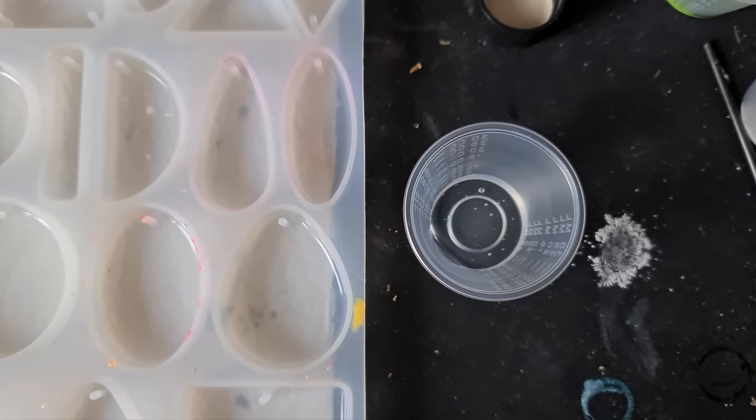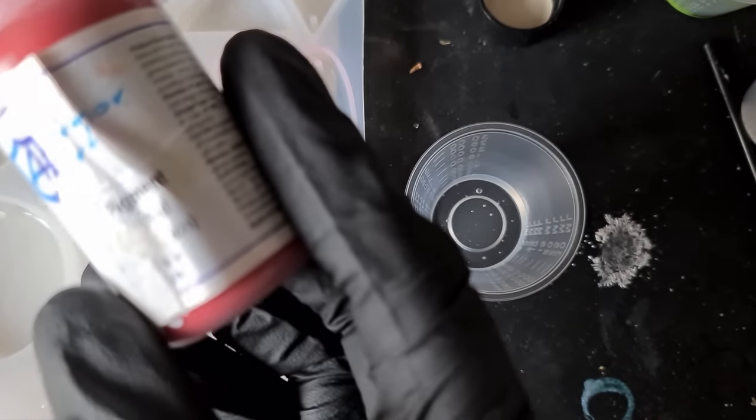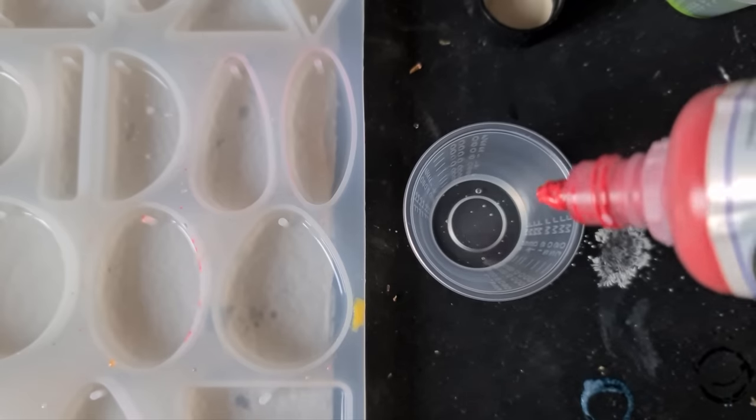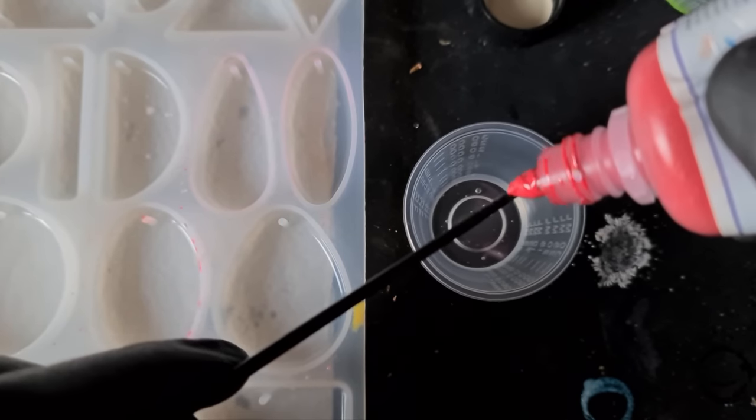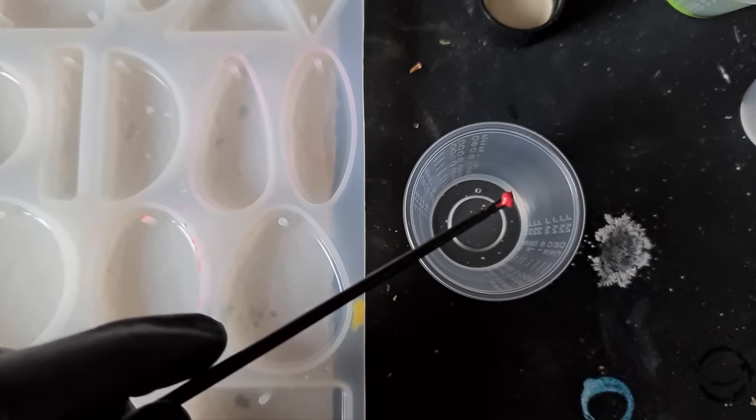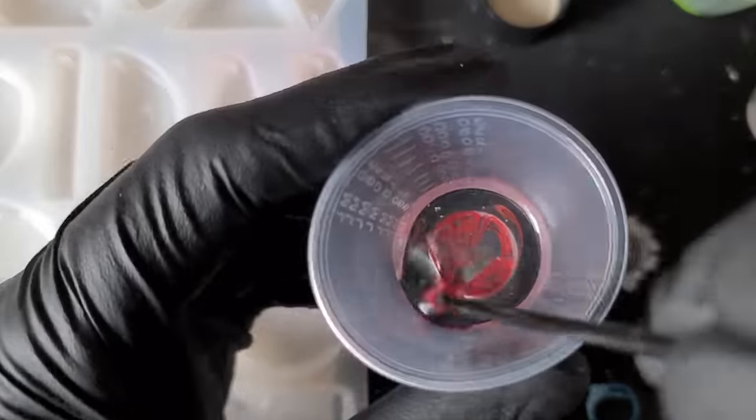You could try mica powders - I can't see why they wouldn't work. You could color this any way you like. This is the Armour Art red pigment paste and I'm just going to put a small amount on the end of my paintbrush.